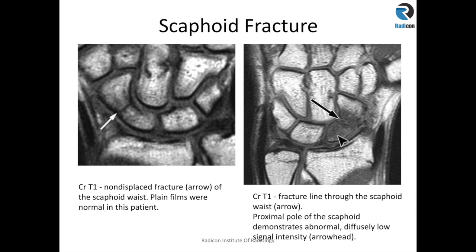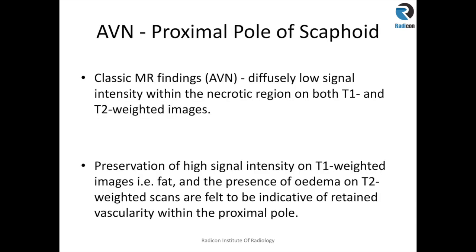In this second case, you can see there is a low T1 signal intensity, somewhat more extensive than in our first case. There are also signal changes within the distal and proximal poles of the scaphoid, more extensive. You can see the normal fat signal in the lunate, but here this is all more intermediate signal. STIR sequences will demonstrate marrow edema. The classical findings of avascular necrosis are diffuse low signal within the necrotic region on both T1 and T2 weighted sequences.